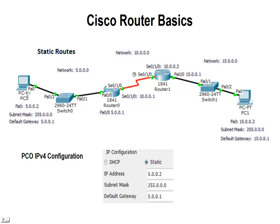We've got two PCs, one on either end — PC0 and PC1. We have two switches, switch 0 and switch 1, and then two routers, router 0 and router 1.